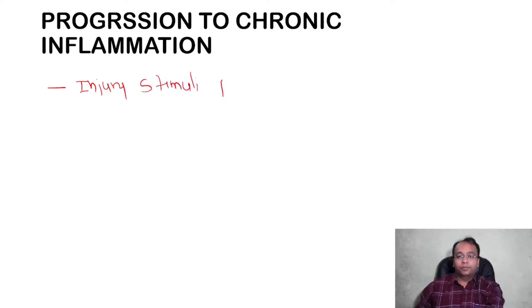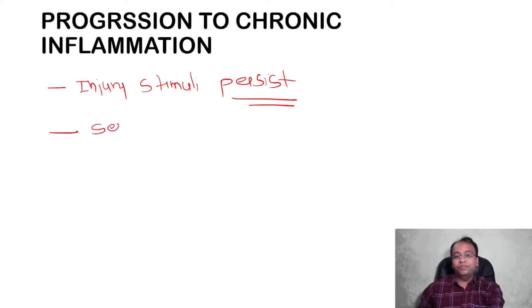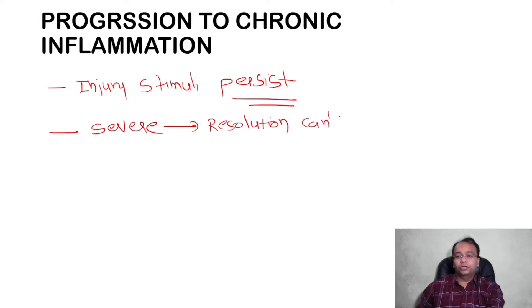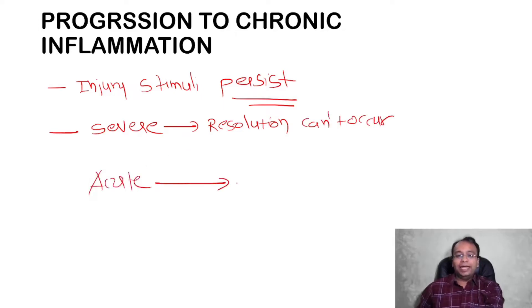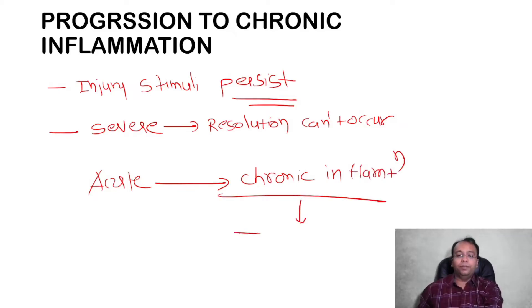The third variety is progression to chronic inflammation. Suppose the injurious stimuli persist in the body, or if the injury is severe where resolution can't occur — in that variety the acute inflammation will get converted into chronic inflammation. And once it is in chronic inflammation, there will be fibrosis.